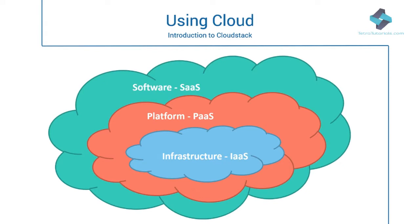The third model is Software as a Service (SaaS). In this model, users gain access to application software and databases. Cloud providers manage the infrastructure and platforms that run the applications. SaaS is sometimes referred to as on-demand software and is usually priced on a pay-per-use basis or using a subscription fee. Some examples of SaaS are Google Apps, Microsoft Office 365, etc. In this course, we will focus on Infrastructure as a Service (IaaS) and Apache Cloud Stack.